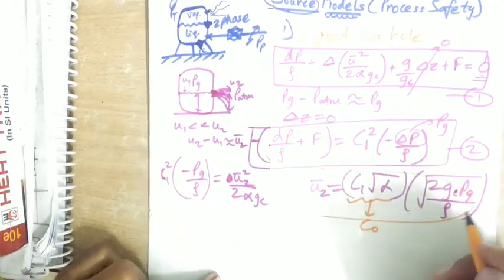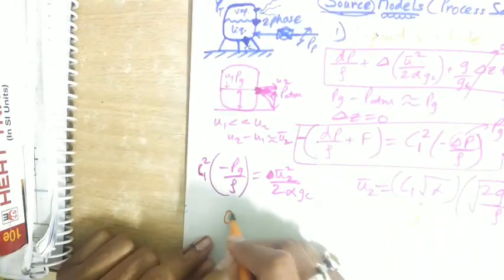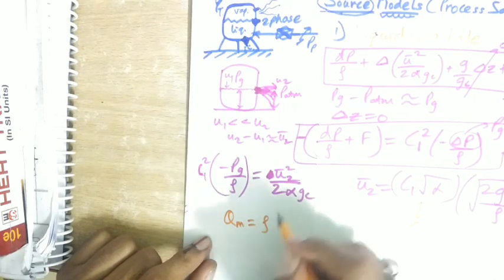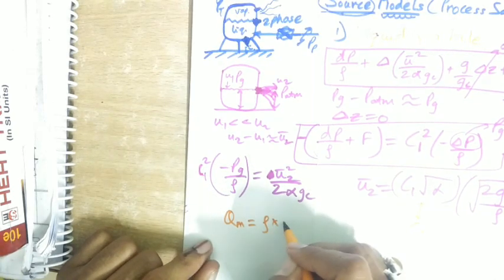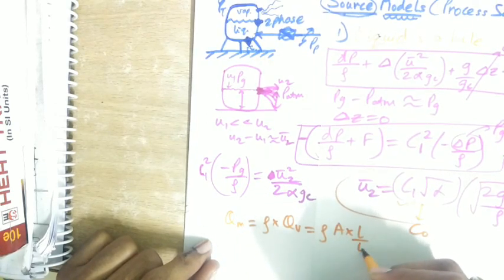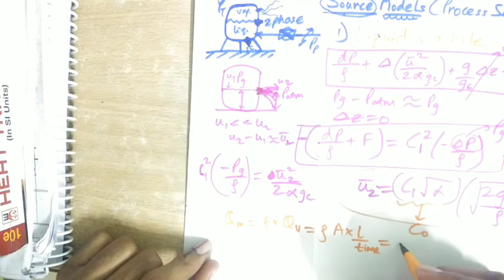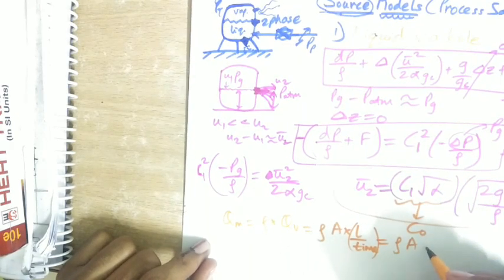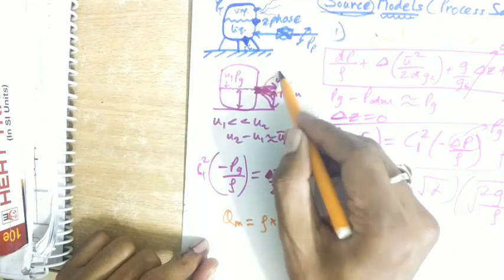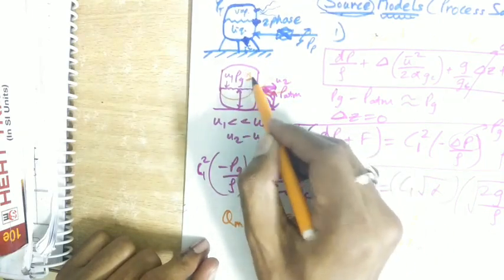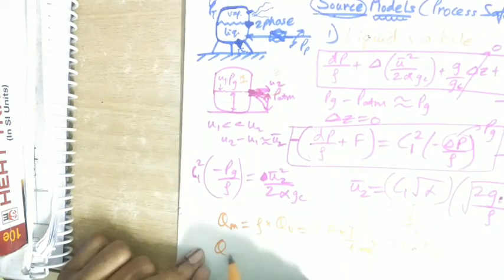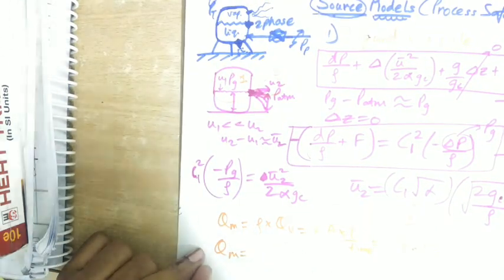Now we find maximum mass flow. Let's take qₘ as maximum mass flow. This mass flow is density ρ into volumetric flow. Volumetric flow is ρ · area · length/time, generalized as ρ · A₂ · u₂. If we consider the outside as 2 and inside as 1, then A₂ · u₂ - put the value of u₂.